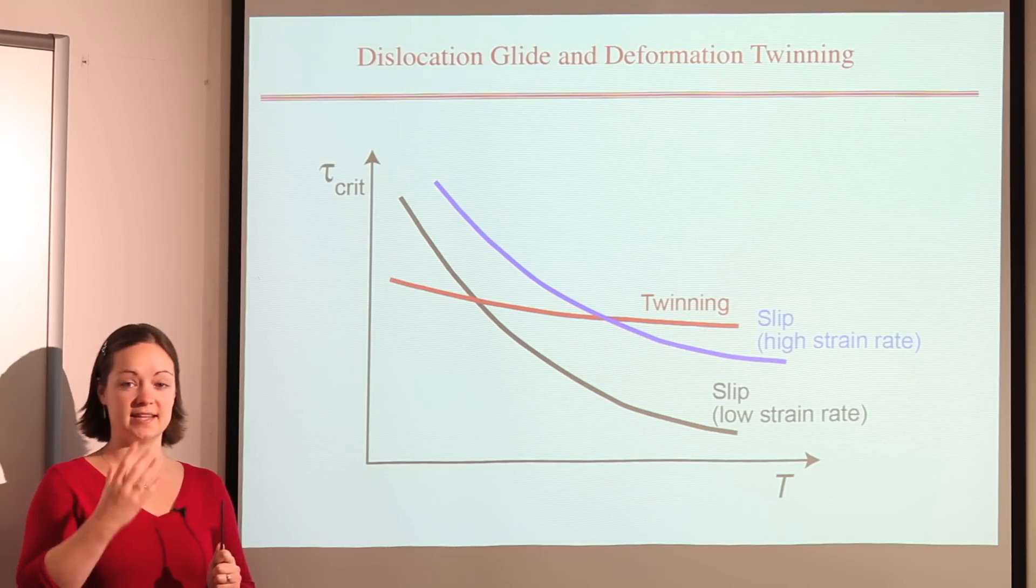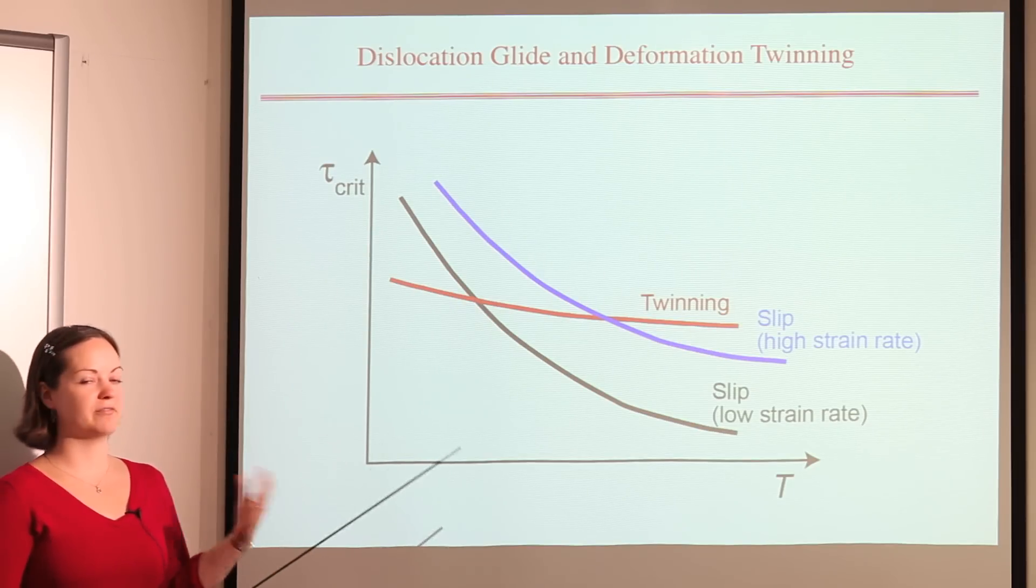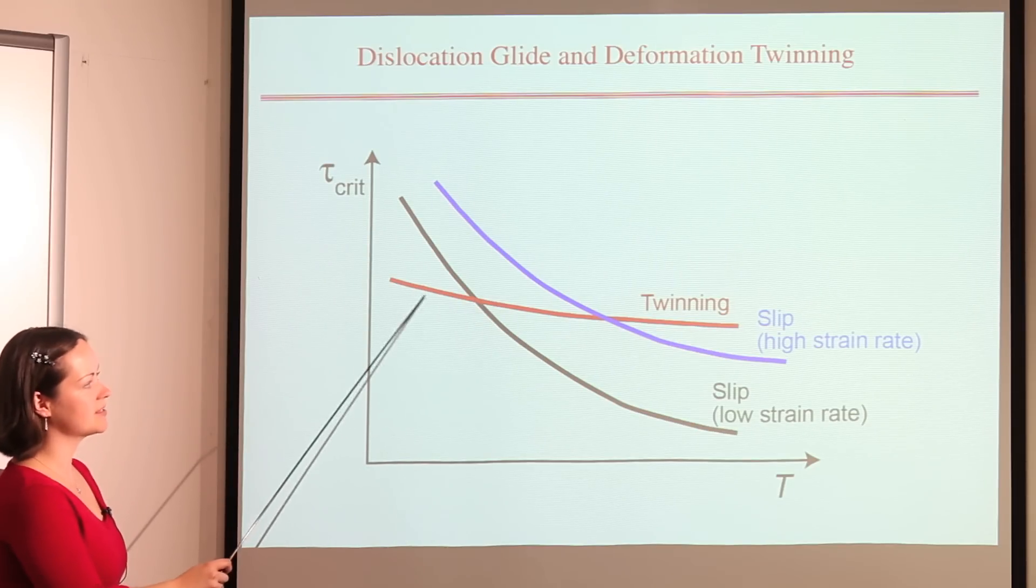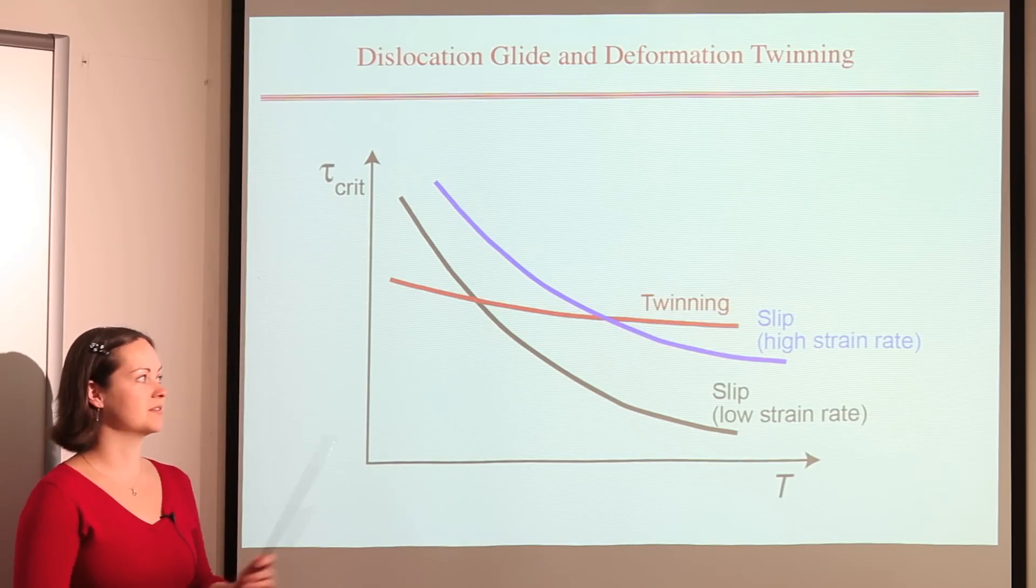In our tin sample, the one at room temperature, we saw that deformation twinning dominated, so we must have been down here somewhere, whereas in the sample at 100 degrees, dislocation motion was favoured.